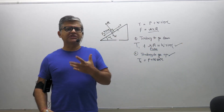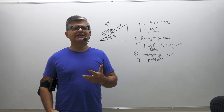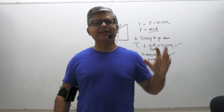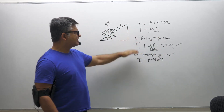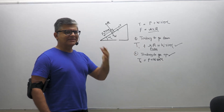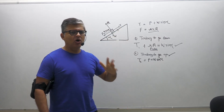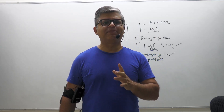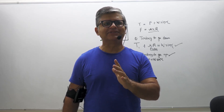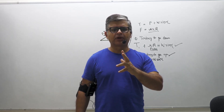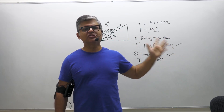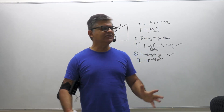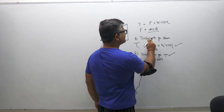So there are two scenarios: tendency to go down and tendency to go up. These two cases give us the range of tension values that result in equilibrium. Any tension between the lower value (tendency to go down) and the upper value (tendency to go up) will keep the body in equilibrium.